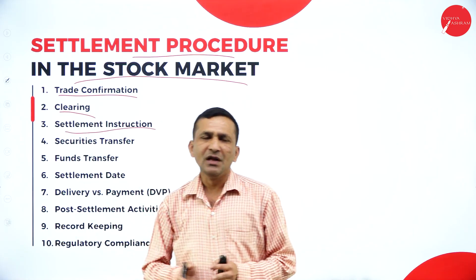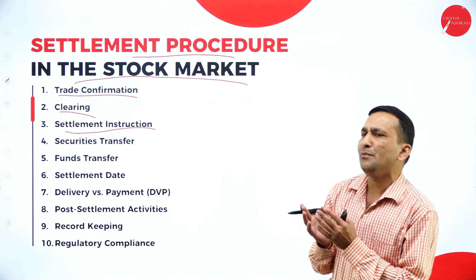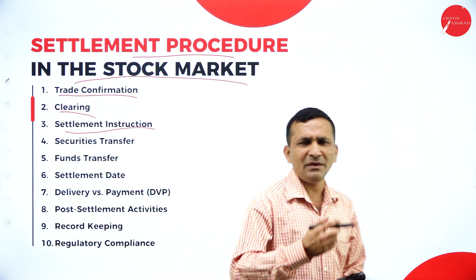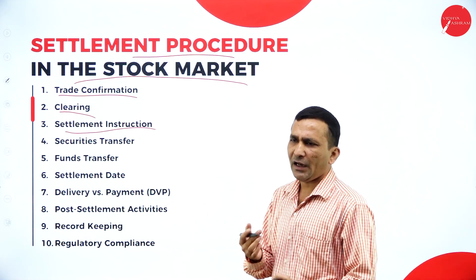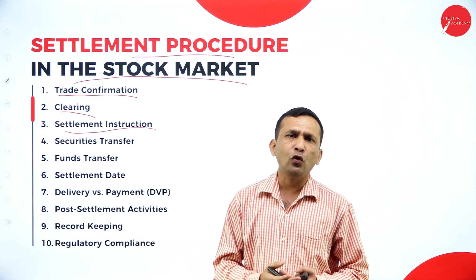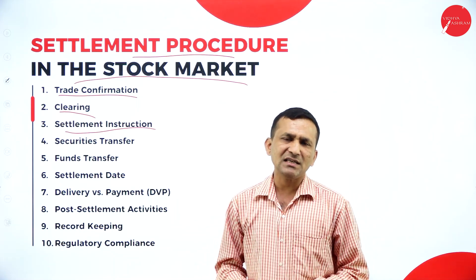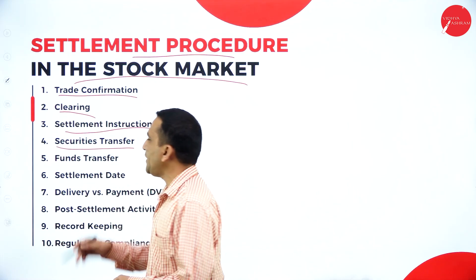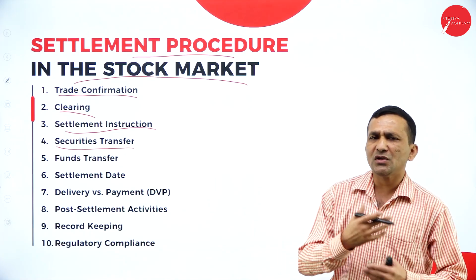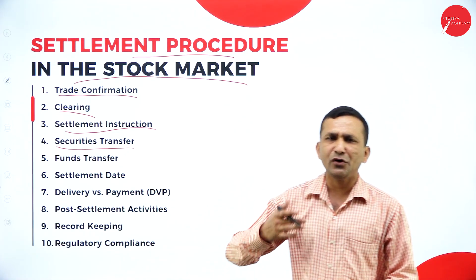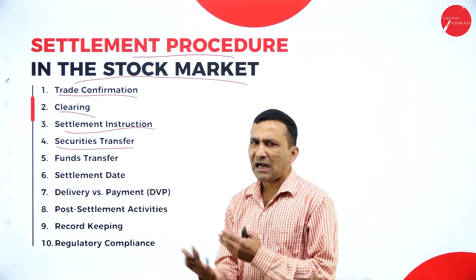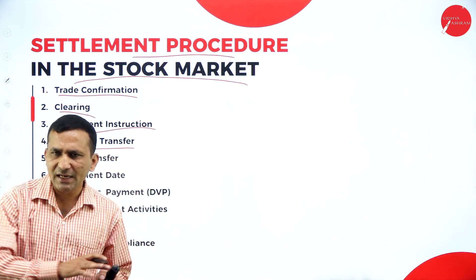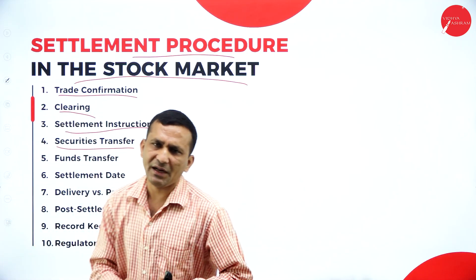Next is settlement instruction. As an investor, they want to follow the settlement instruction. For example, T+2 means trading two days settlement, or intra-trade, or going for delivery. So the settlement instruction — investors as well as companies want to follow here. Next is security transfer — easily your stock can be transferred, your bond can be transferred, your debentures. The transferring process: suppose I am a shareholder and I don't want to hold my shares, I can go for transferring to somebody or I can sell.